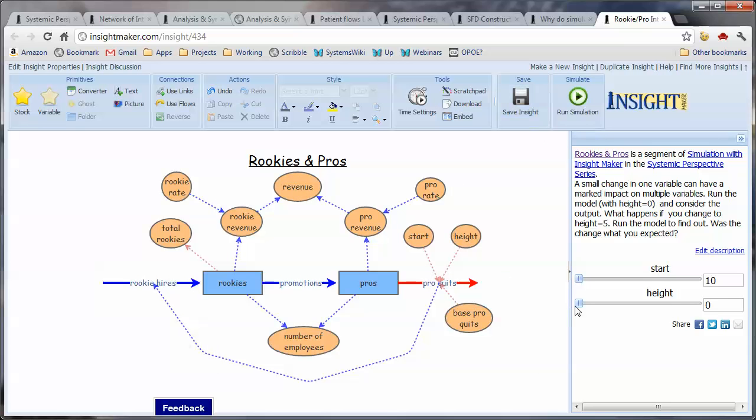Now if in month 10 the number of pros that quit every month jumps from 10 to 15, the question is what happens to the other values in this model? There's only been one single change at one point in time. The number of pros quitting changes from 10 to 15.